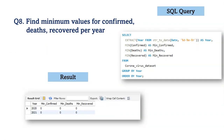Next, we find the minimum of confirmed, deaths, and recovered per year. To answer this, we have used the MIN function, grouped and ordered by a particular year. Based on analysis, the minimum of confirmed, deaths, and recovered for both years is zero.